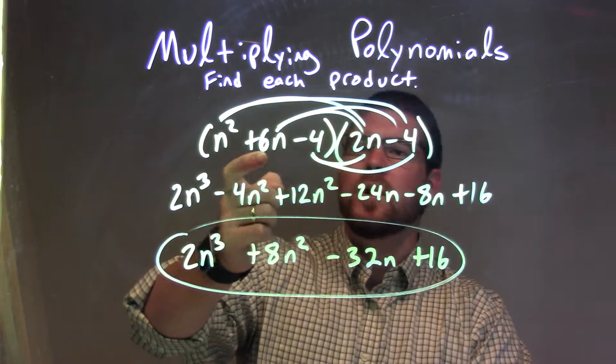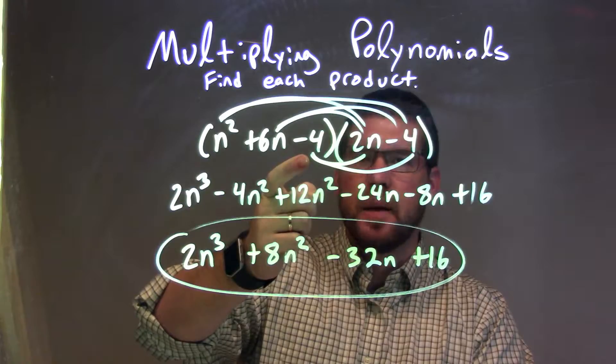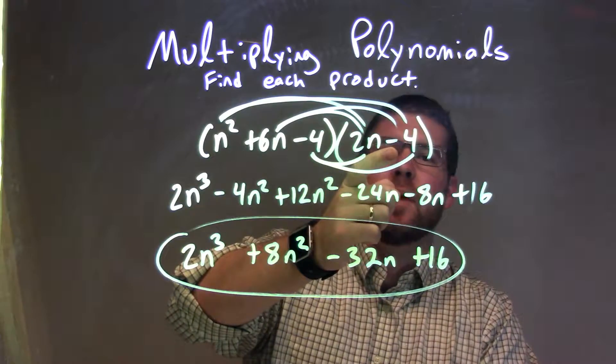So let's recap. We're given n squared plus 6n minus 4, times the second parenthesis, 2n minus 4.